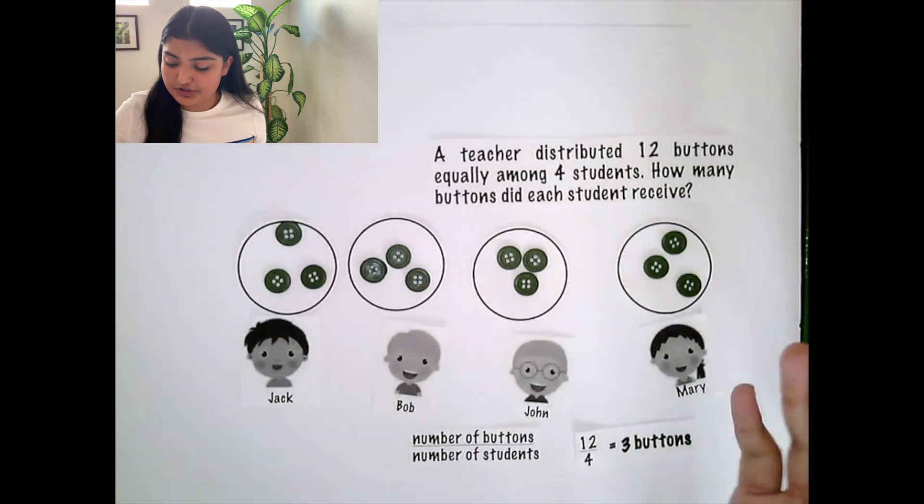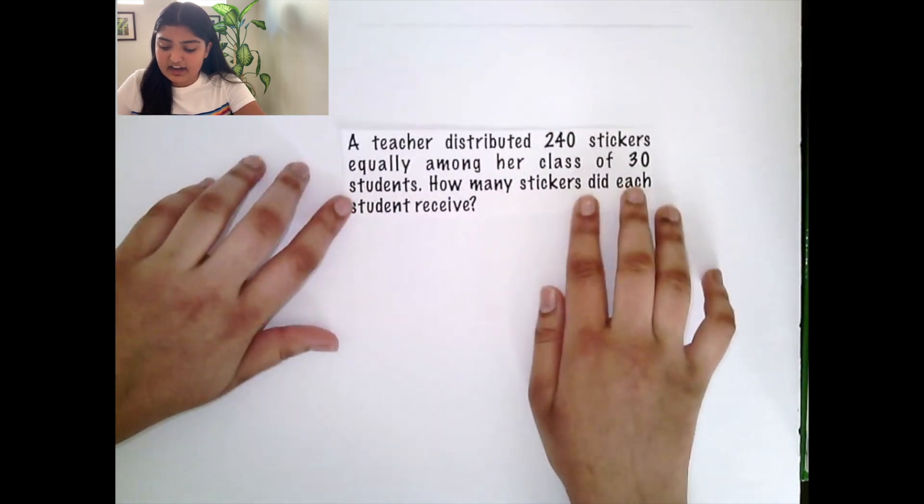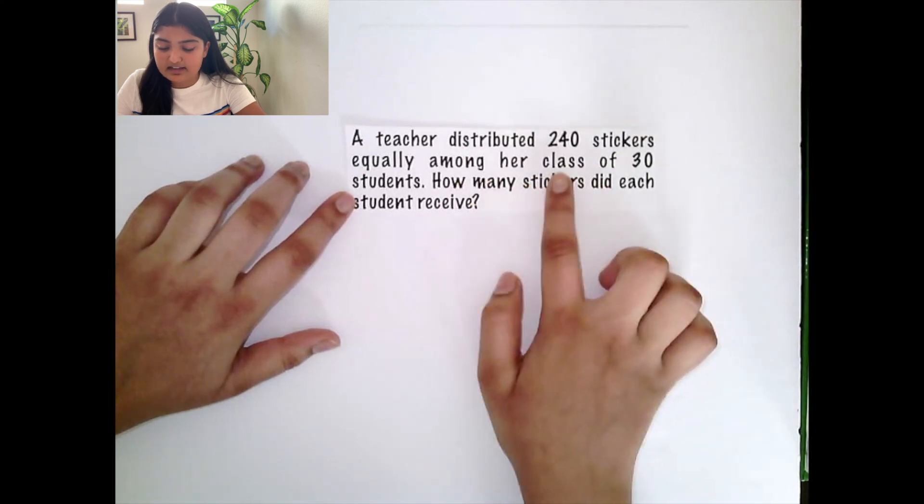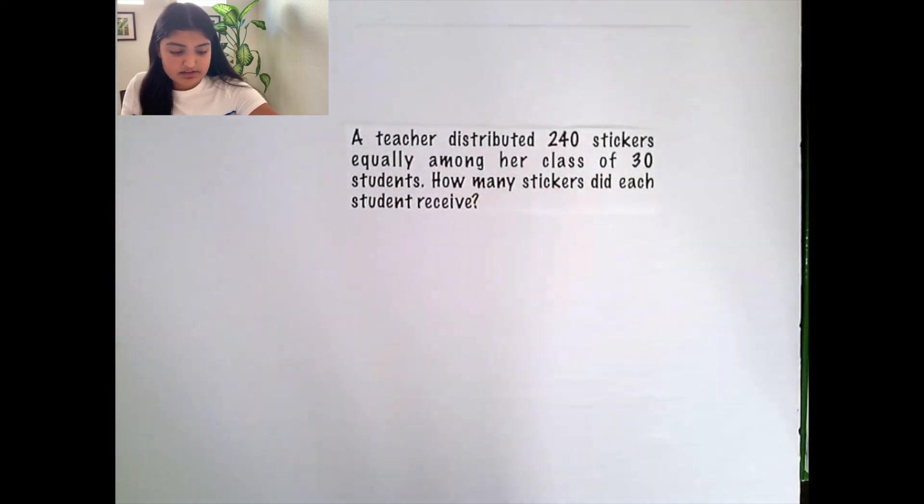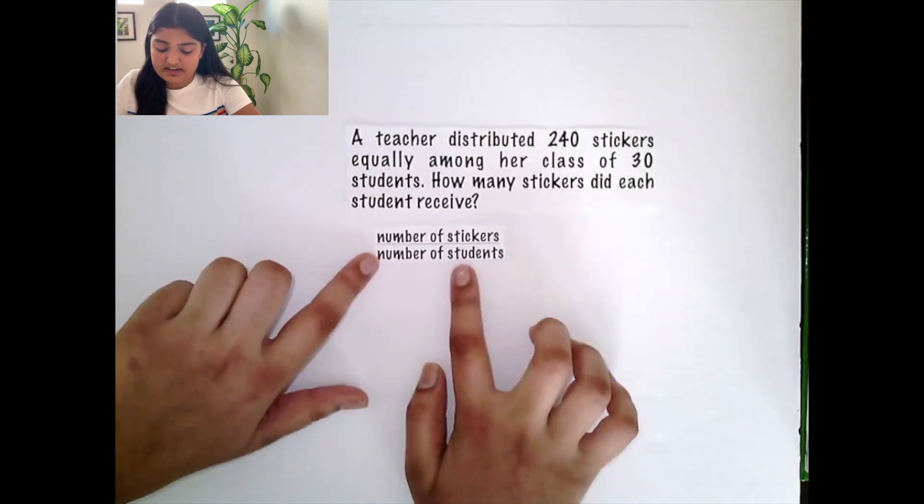Now, let's turn back to the original question. Here, the teacher had 240 stickers and she wanted to distribute these equally among her class of 30 students. So we can take the number of stickers and divide them by the number of students.